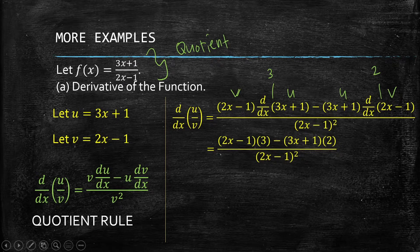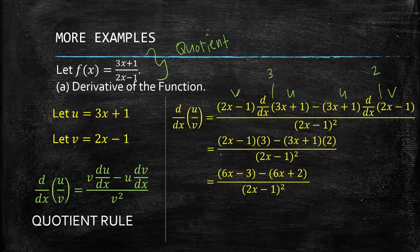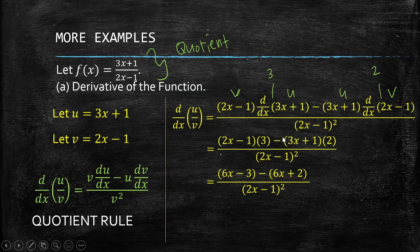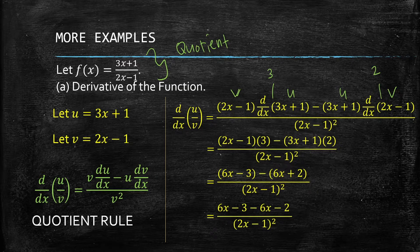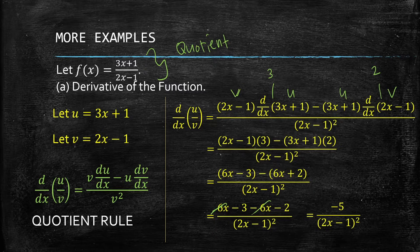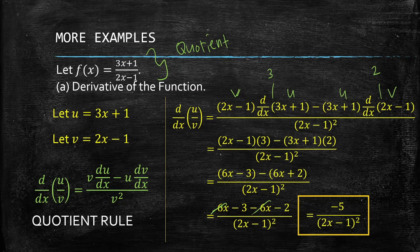We simplify further by distributing the constants, giving us 6x - 3 minus the quantity (6x + 2). Take note: do not remove the grouping symbol if you have not yet distributed the constant. So we have 6x - 3 - 6x - 2. The 6x terms cancel out, and negative 3 minus 2 is negative 5, all over (2x - 1) squared. This is the answer.